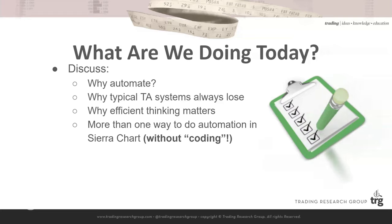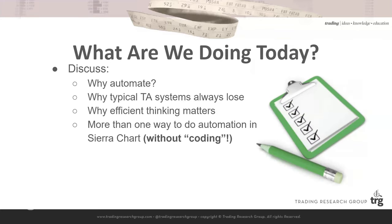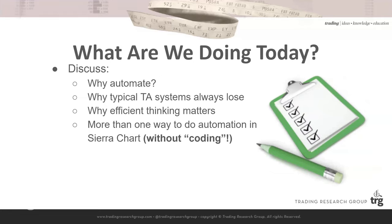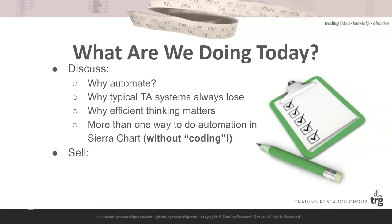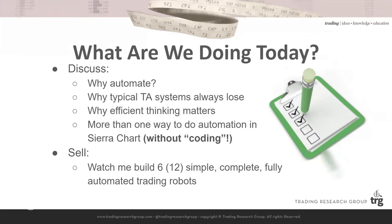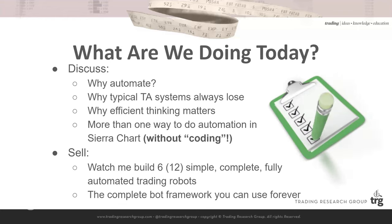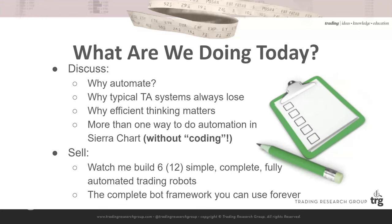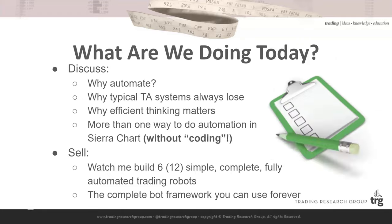We're going to talk about how there are multiple different ways to automate in Sierra Chart, and no, you don't have to code. Most people think coding means programming languages like C++ or Java. It does not have to mean that at all. I'm also going to show you how you can watch me build six — actually 12, because there's going to be two versions of each bot, a high frequency and a low frequency version — simple but totally complete and fully automated bots. Most importantly, you'll come away with a complete reusable framework you can drop in and have a new bot up and running in no time.